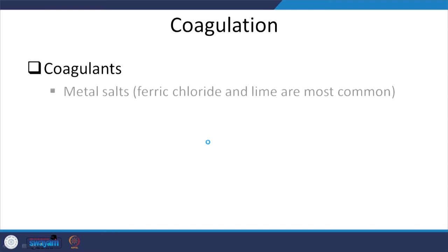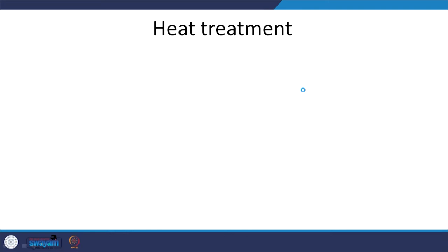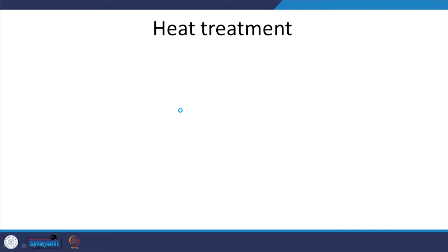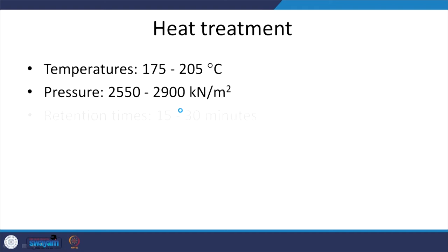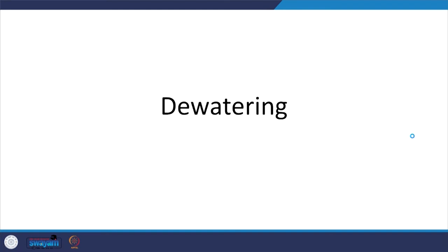Coagulation — which is what we are talking about with conditioning — typically uses metal salts like ferric chloride or lime, as used in water treatment and wastewater treatment, and organic polymers to agglomerate small particles. Heat treatment is also done sometimes but rarely. It involves relatively high temperatures and low retention times. Some organics will be oxidized at high temperatures, which can lead to breaking of microbial cells.